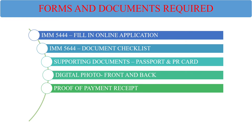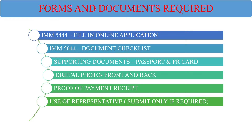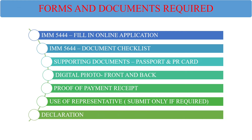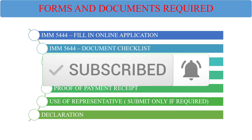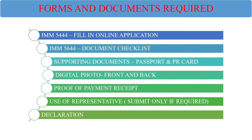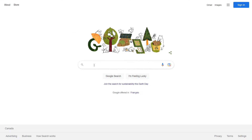The next document is the representative form — if someone else is representing your application, you need to provide this form. If you are applying on your own behalf, you don't need it. The last item is the declaration, which we will discuss during the video. Once everything is okay, your file is complete and you can submit. If you're new to our channel, please consider subscribing to get the most up-to-date news, tips, and tricks about Canadian immigration.